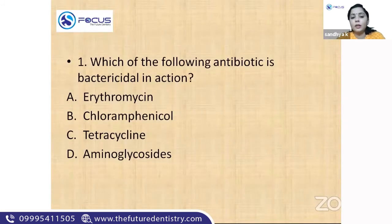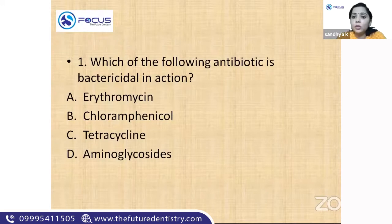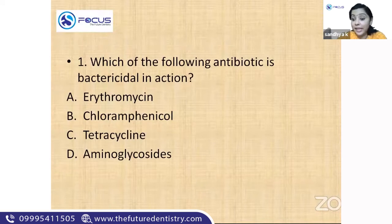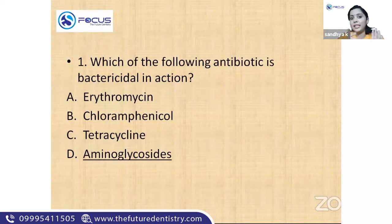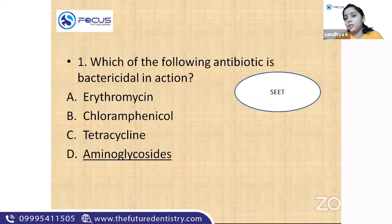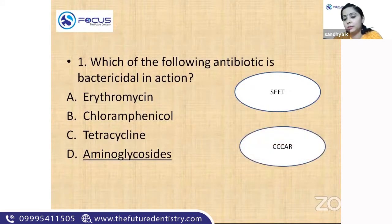MCQ practice: 'Which of the following antibiotic is bactericidal in action?' Using the CAR mnemonic — cephalosporin, ciprofloxacin, co-trimoxazole, aminoglycosides, rifampicin — the answer is aminoglycosides. Chloramphenicol is bacteriostatic because it comes with tetracycline in the SEET group. Bacteriostatic agents: SEET plus chloramphenicol. Bactericidal: CAR plus penicillin and cephalosporin.